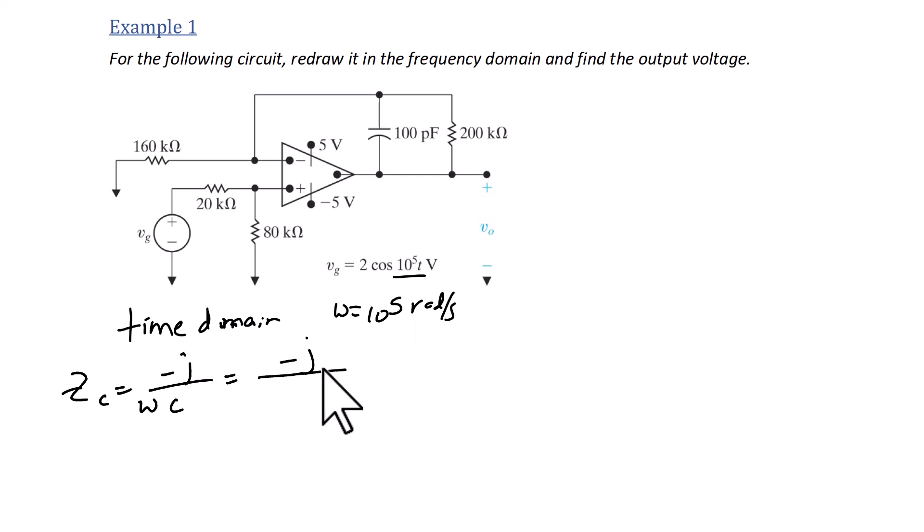We use that frequency to rewrite our impedances in the frequency domain as well as to write our input voltage as a phasor. So the impedance of a capacitor is negative j over omega c, or negative j over 10 to the fifth times 100 picofarads, which equals negative j 100,000 ohms. So then in the frequency domain, this circuit looks like the following.